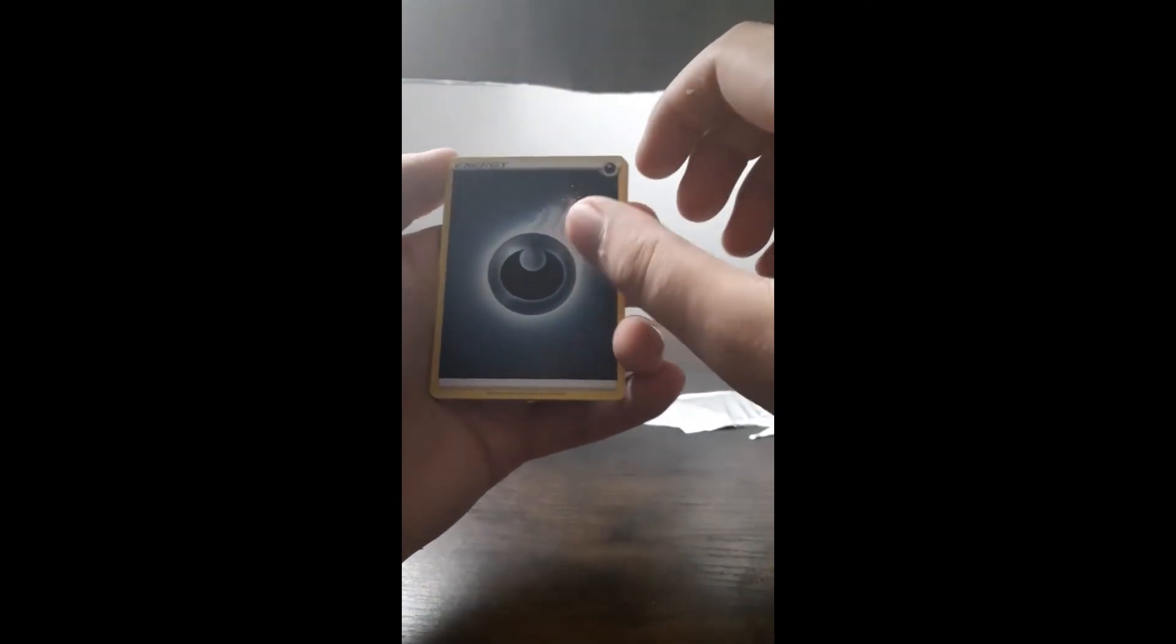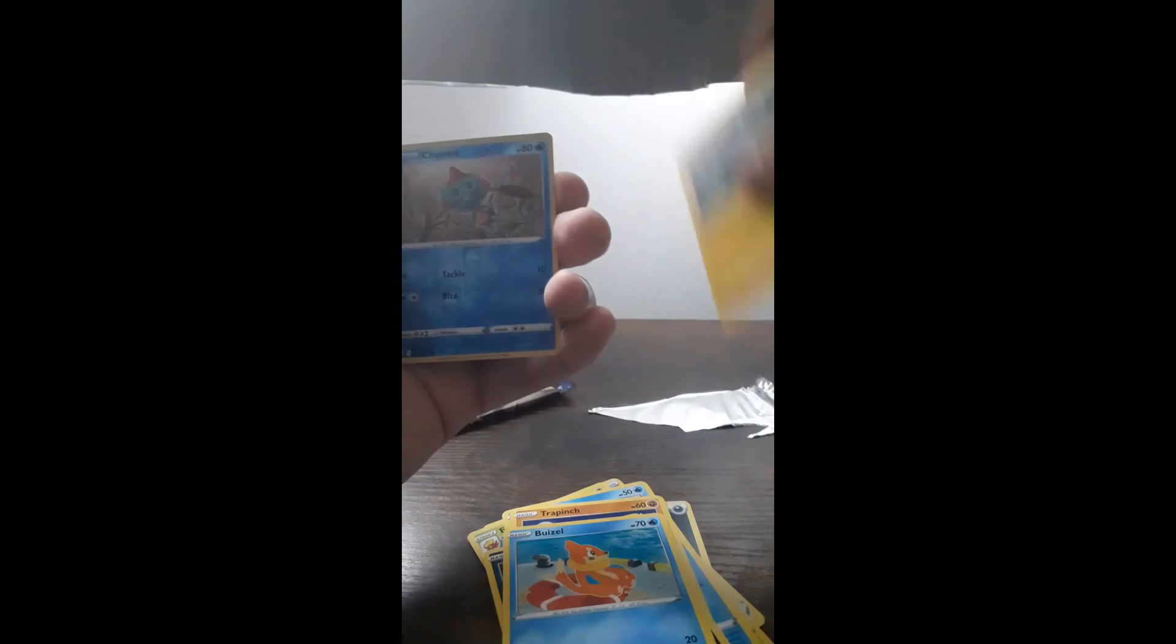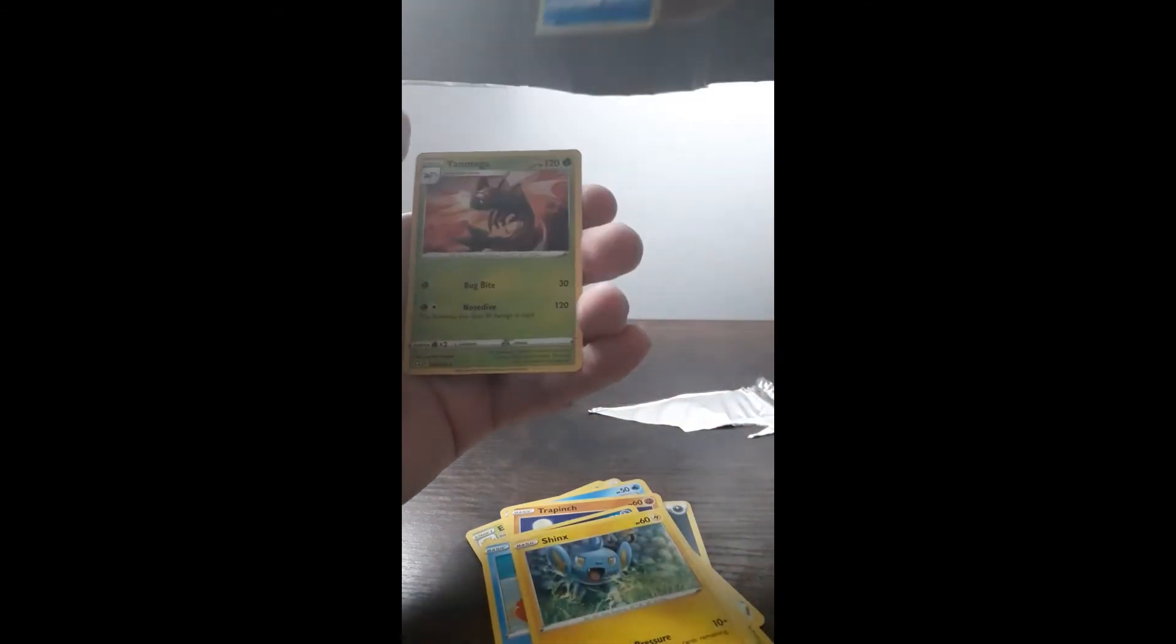I think this is Dark Energy. Rusted Shield. Dartrix. Eldegoss. Snom. Trapinch. Nickit. Weasel. Shinx. Reverse Holo Chewtle. And their original Mega Evolution Yamper.